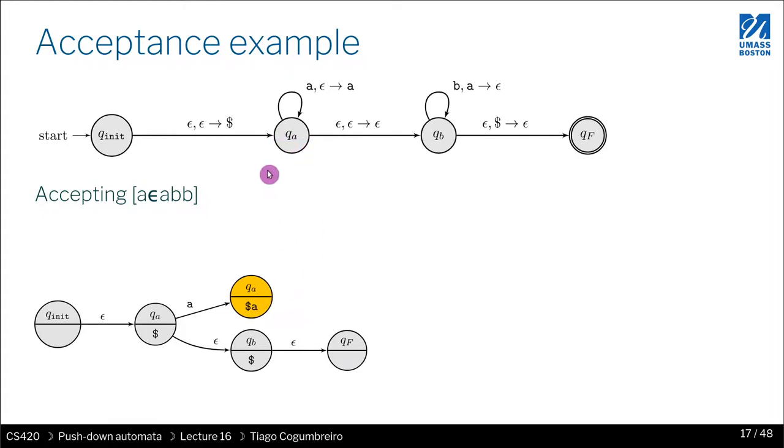At this point, I want to read epsilon again. So if I read epsilon, I can go to QB and then let's see if I can go to QF. If I go to QB, I leave my stack unchanged, which means I would have the same stack, dollar sign A. And if I go to QF, then my stack would be, the top would be A and not dollar sign. So I would not be able to reach QF. So the only place I can reach is QA.